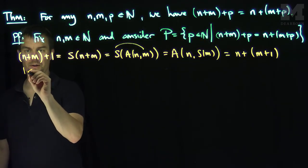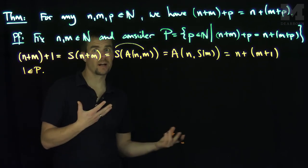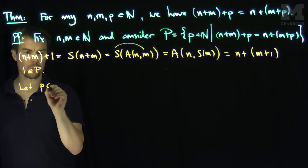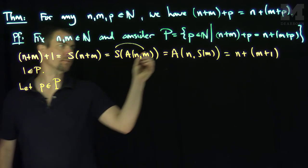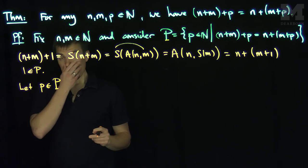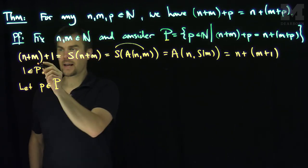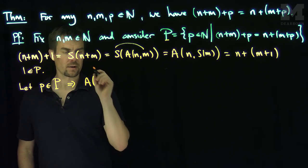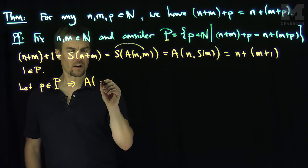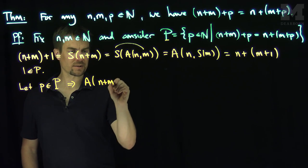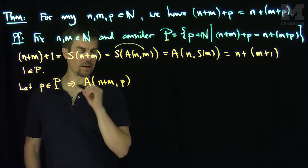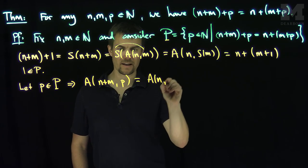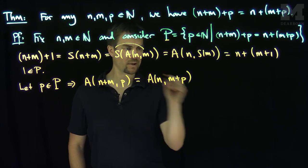So this proves to us that one is in the set P. Now let's let any p be in P. So let's let little p be in capital P. And then what does that tell us? That tells us that the addition of (n+m) and p is equal to the addition of n and (m+p).